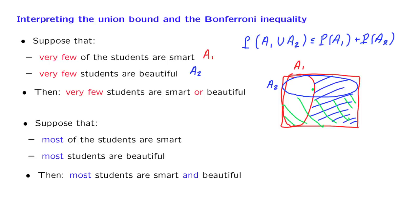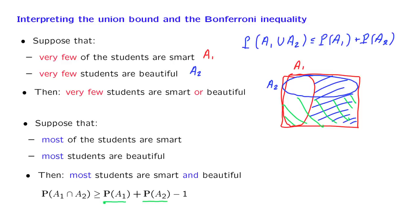How can we turn this into a mathematical statement? It's the following inequality that we will prove shortly. What it says is that the probability of the intersection is larger than or equal to something. If this probability is close to 1, meaning most students are smart, and this probability is close to 1, meaning most students are beautiful, then the difference will be close to 1 plus 1 minus 1, which is 1. Therefore, the probability of the intersection is going to be close to 1 — the conclusion that indeed most students fall in this intersection and they're both smart and beautiful.